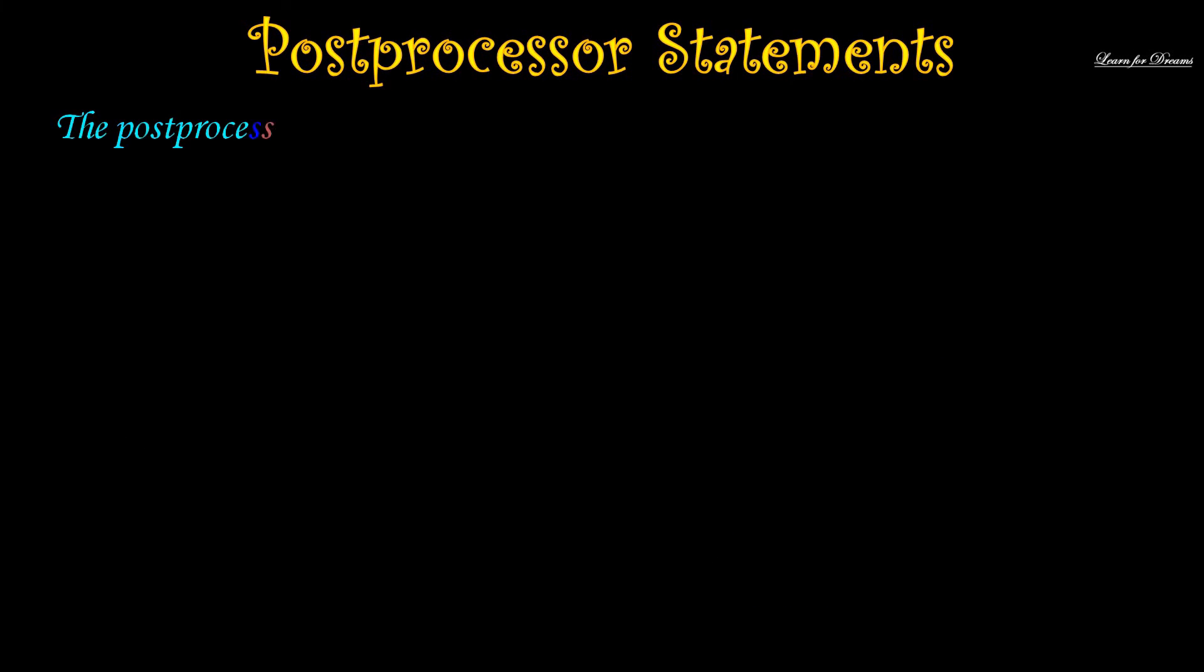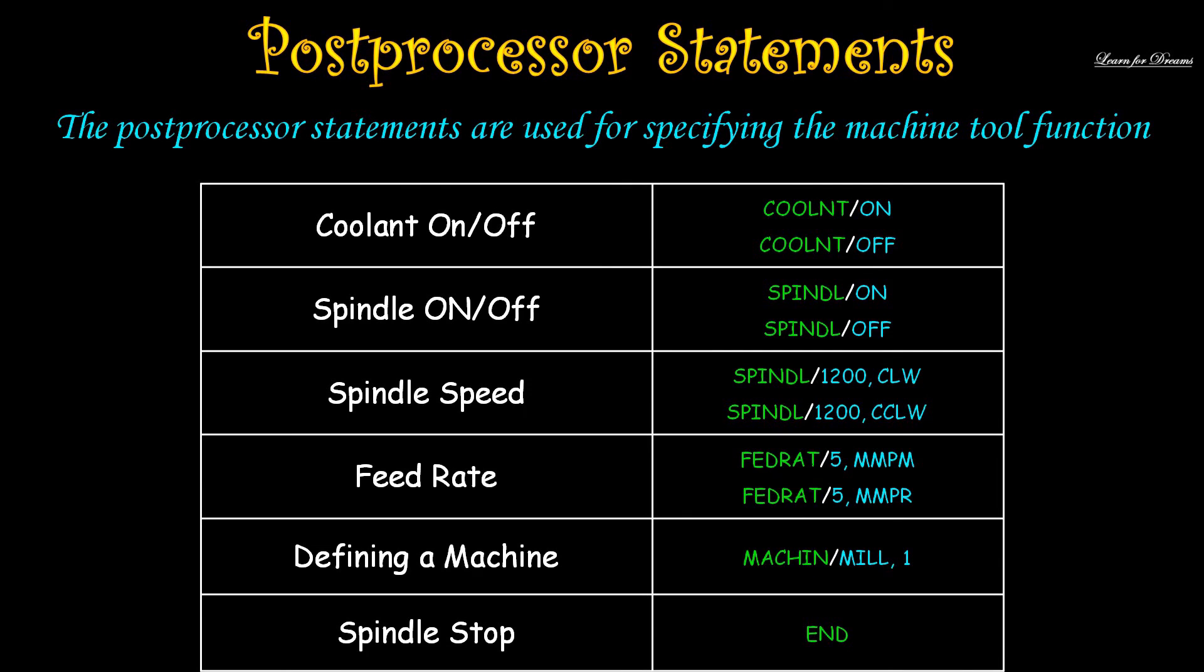Third type of statements is post processor statements. These statements are used to specify the machine tool function. These are a few statements and their format for coolant on or off, spindle on or off, spindle speed, etc., like we use M-codes.